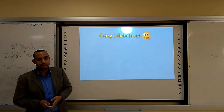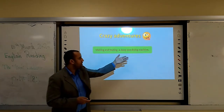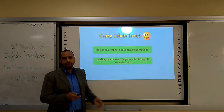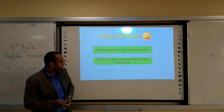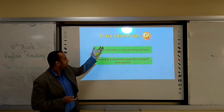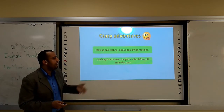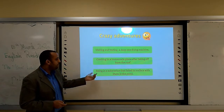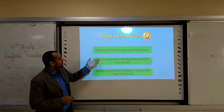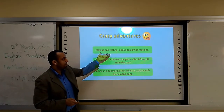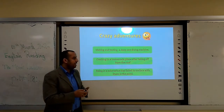What crazy adventures did they make? First, making and testing a deep sea diving machine. Number two, crashing in a homemade plane — they made a plane and took off from the roof, and the plane crashed. And the last one, being in a submarine that failed to surface with them in the pond. These are the crazy adventures they made: a diving machine, a plane, and a submarine that failed to surface with them in the pond.